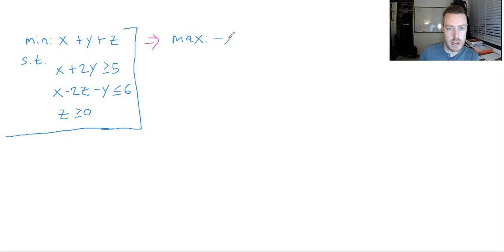So now this turns into—let's use blue here again—now we're going to maximize this function. Again, we're going to multiply the objective function by negative one, so it's going to turn into negative x minus y minus z. Such that, now if you look here on the left-hand side, the first constraint has a greater than or equal to sign, and that's not standard form for a constraint.